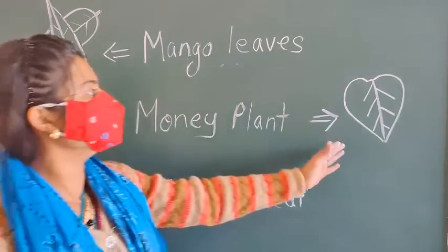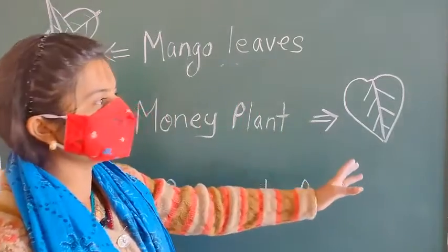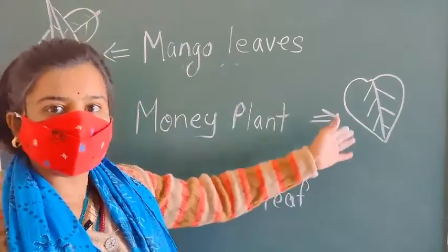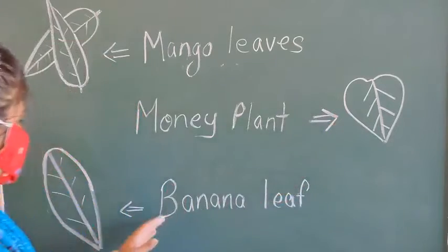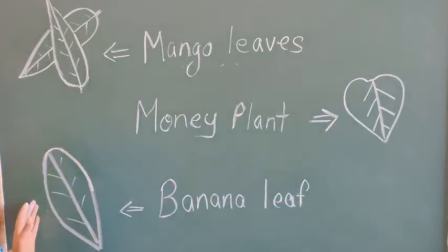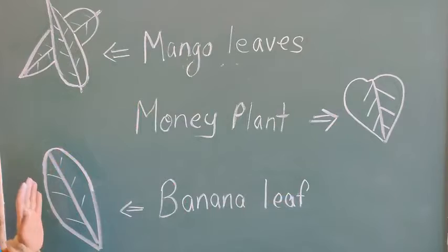Next yeh money plant hai. Yeh kaisi rehti hai? Thodi heart shape mein rehti hai. Next yeh banana leaf hai. Yeh kaisi rehti hai banana ki leaf? Size mein kaisi rehti hai? Badi rehti hai.